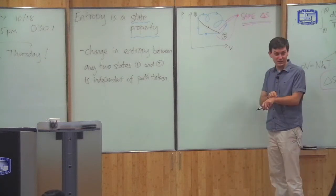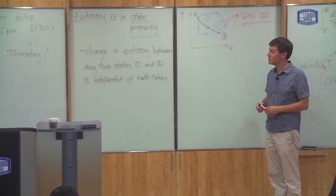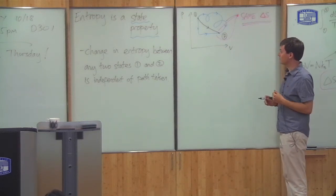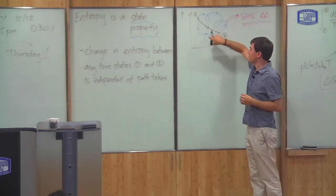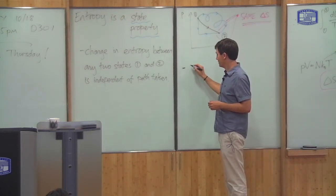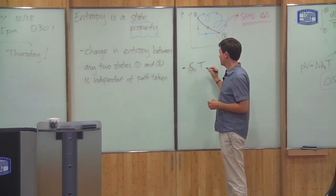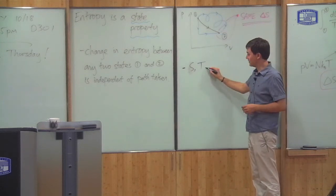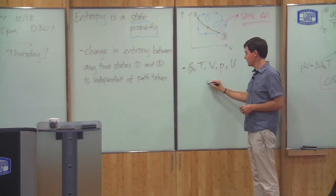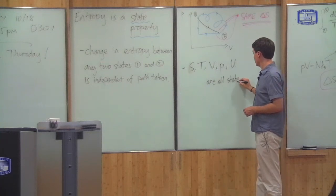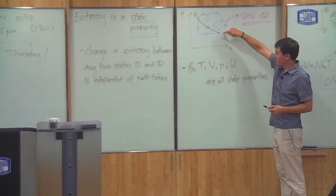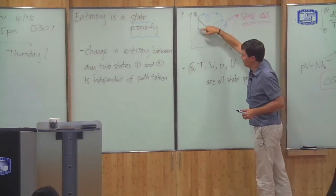This fact is not clear from its definition, but is found empirically — when you do experiments you find that this is true. So a state property means that if I go between two states of a system, the path I take doesn't matter. Many other things are also state properties: temperature, volume, pressure, and internal energy U. All of these are state properties, which means I only need to know the point to define these properties — I don't care about the path taken to reach that point.